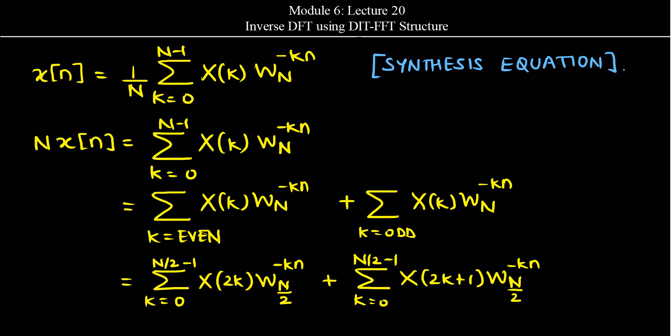Hello everyone, welcome to another lecture of the course Digital Signal Processing. In the previous lecture we looked at the decimation in time fast Fourier transform and decimation in frequency fast Fourier transform. Both of these algorithms allow us to get the value of the DFT, that is X, from the given time domain signal — transforming from time domain to frequency domain. The question that now arises is: can we use a similar kind of structure for computing the inverse discrete Fourier transform?